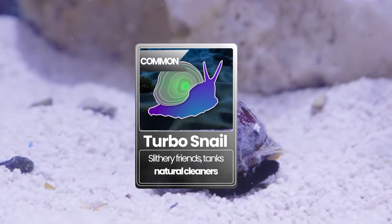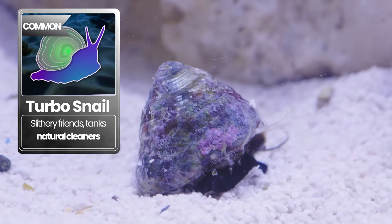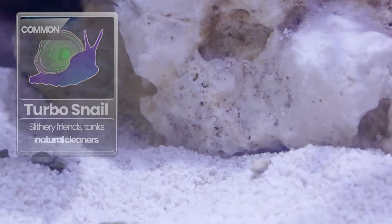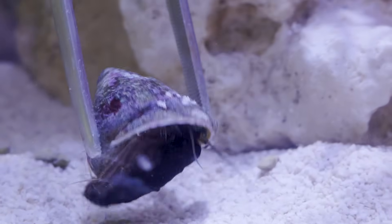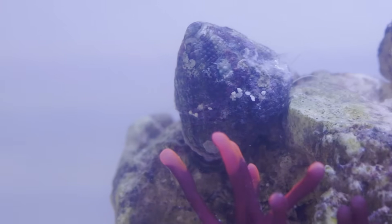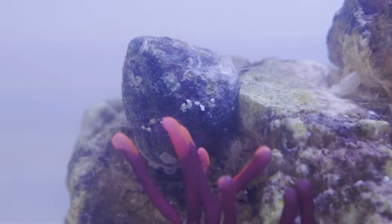After they got their bearings, we decided they needed some friends. Next is the cleanup crew, the Turbo snails. These guys hail from the rocky shores of the eastern Pacific, where strong currents and endless algae keep them busy. We placed them near the rocks and within moments they were off, exploring every crevice. In a reef tank, they serve the same purpose, tirelessly scouring sand, rock and most importantly, the glass for every hint of algae.